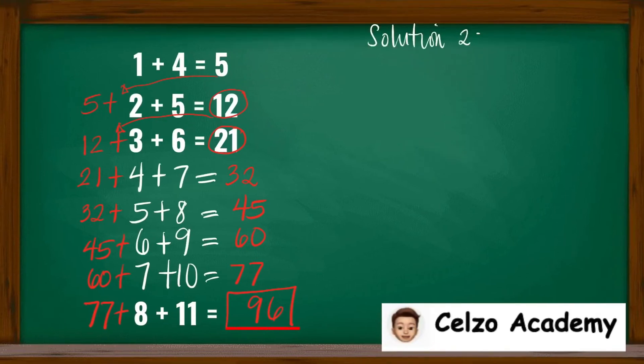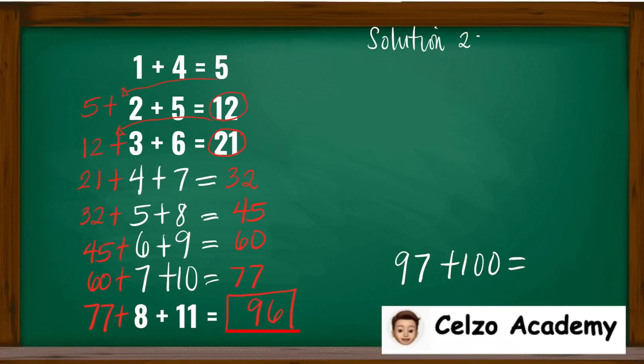What about if you're asked to find the value of 97 plus 100 in this pattern? Does this mean that you will do the process 96 times? So now I will show you a more efficient way of solving this particular problem. The first line is the same thing as 1 plus 1 times 4, which is 5. The second is the same thing as 2 plus 2 times 5, which is 12.